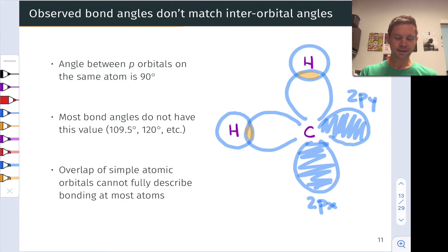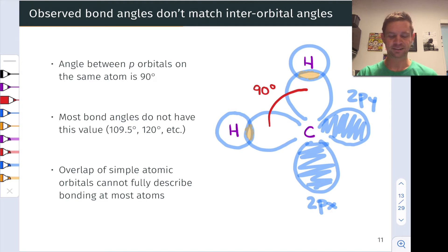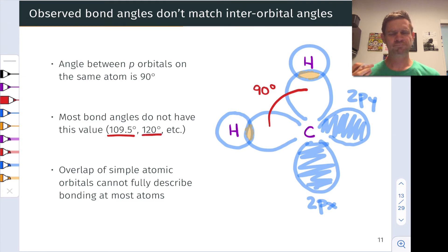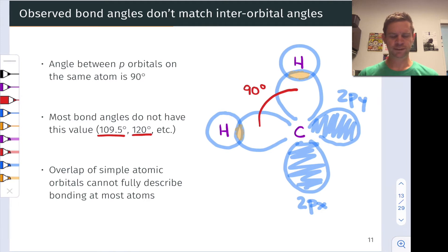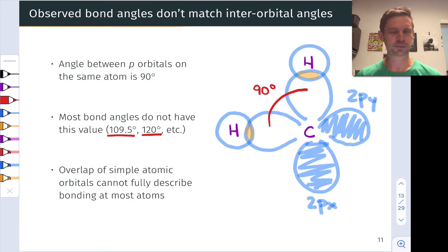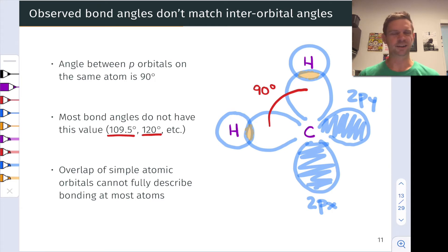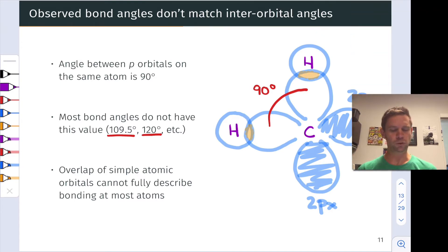The problem is that the implied bond angle between the CH bonds using 2p orbitals is 90 degrees, but we know from VSEPR theory and from direct experimental observation that the bond angle in methane is 109.5 degrees. There are other molecules where the bond angles are 120 degrees in trigonal planar geometry. We seemingly can't use simple atomic orbitals to achieve the bond angles of 109.5 or 120 degrees, since the angle between p orbitals is 90 degrees, and similar issues apply to d orbitals. So simple atomic orbital overlap can't fully describe bonding in most atoms, particularly in organic molecules where tetrahedral and trigonal planar geometries are the norm.